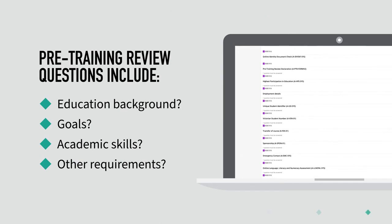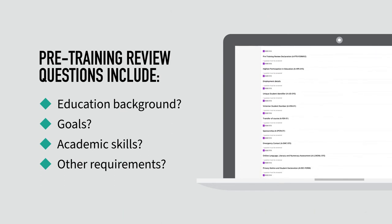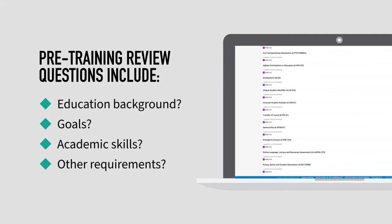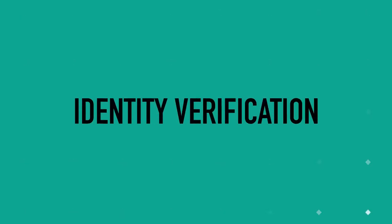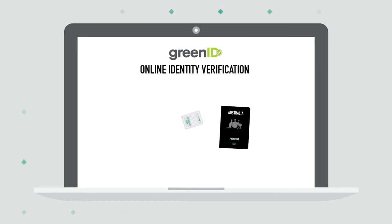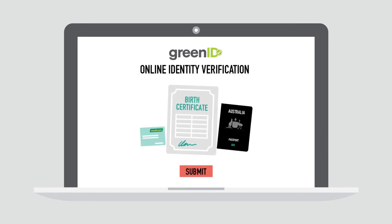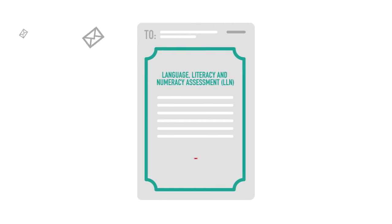The pre-training review helps us to understand if the course is right for you. If we find it's not suitable, we work with you to find one that is. You will also need to verify your identity. As part of the online application process, you will receive an email where you can click through to the GreenID Online Verification website and enter the details from your identity documents. After you press submit, you will receive an email with a link to complete a language, literacy and numeracy assessment. If you can't see the link, please check your junk folder.